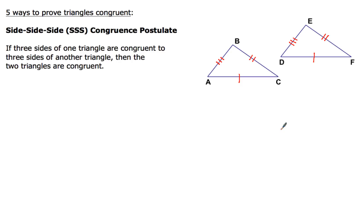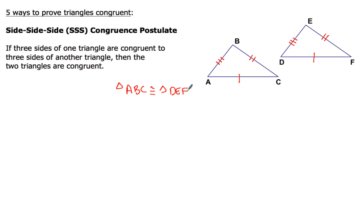If three different sides of one triangle are congruent to three sides of another triangle, then the two triangles are congruent, so you can write a congruent statement that would go something like this: triangle ABC is congruent to triangle DEF. Now that's not the only congruent statement — there are several other ways to write that, which I'm sure you guys know how to do.